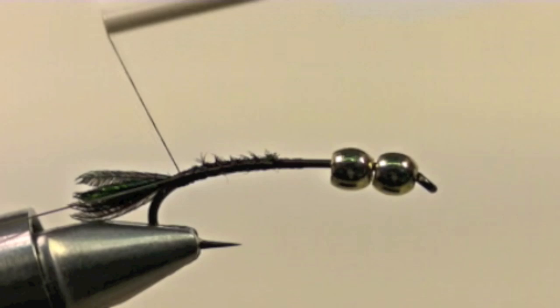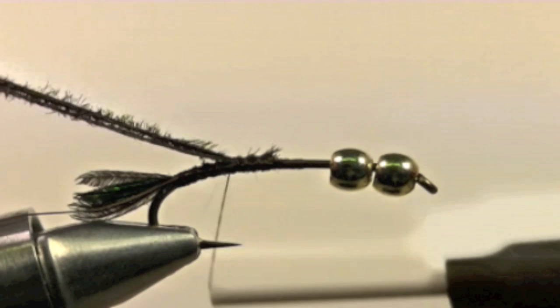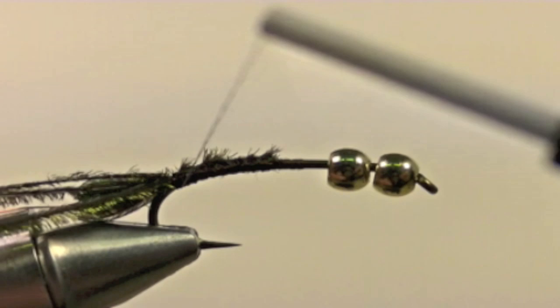Tie in a small piece of black copper wire back to the bend of the hook, then bring our thread forward. Here we will tie in a small clump of peacock hurl. Bring this back to the bend of the hook.